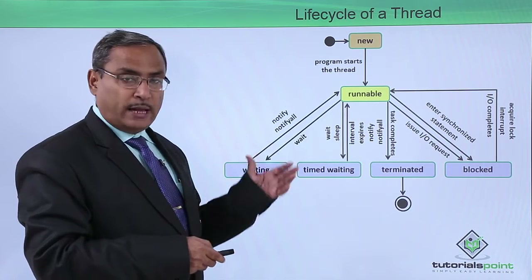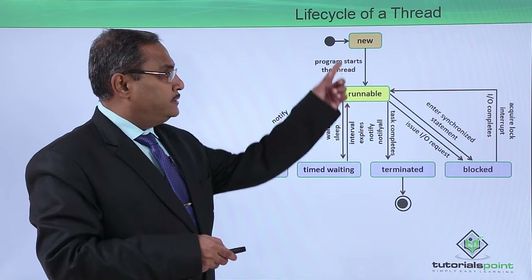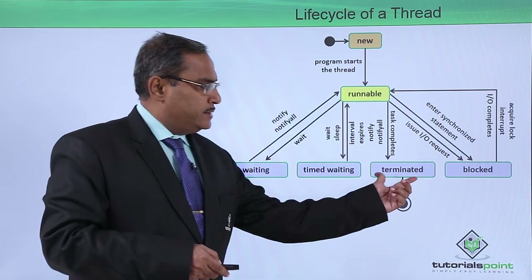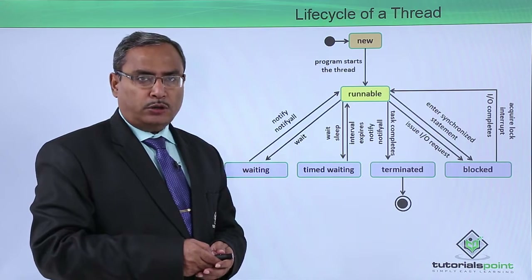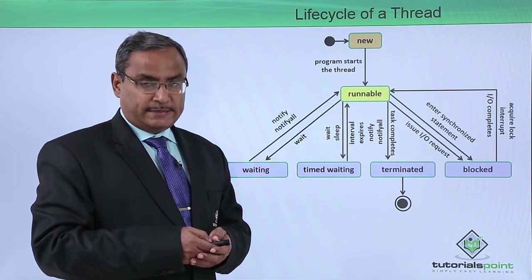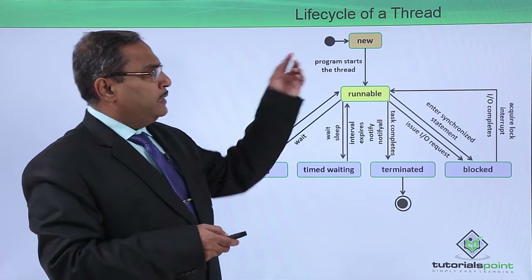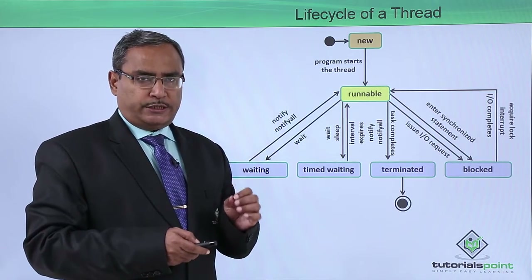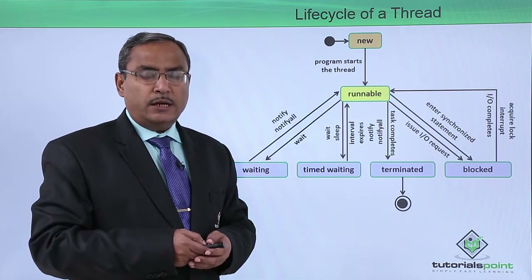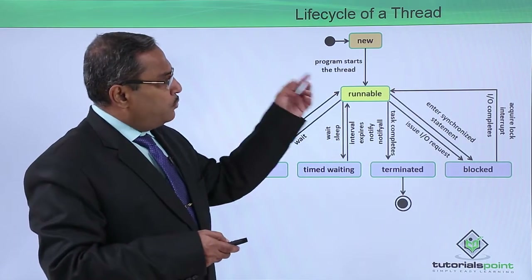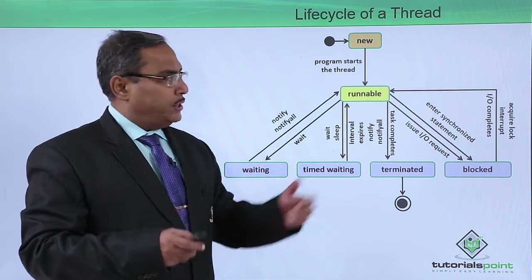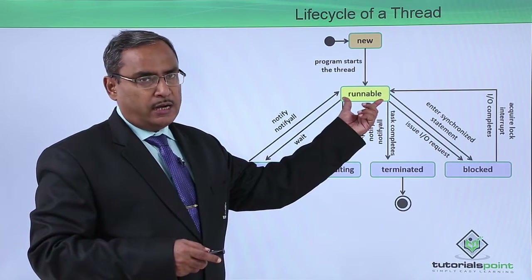Here in the diagram we are finding certain states: new, runnable, waiting, timed waiting, terminated, and blocked. The terminated state can also be called the dead state. Whenever a new thread is originated, it will be found in the new state, also known as the born state. When the thread starts its execution, it will be found in the runnable state.